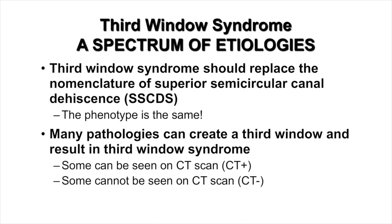Third window syndrome should replace the nomenclature of superior semicircular canal dehiscence. This is important because there are multiple sites where a third window can occur and the phenotype is the same or very similar. Many pathologies can create a third window — some visible on CT scan (CT positive) and others that cannot be seen with current CT resolution.